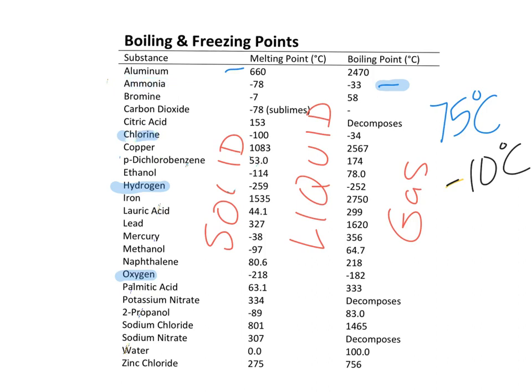Suppose I give you a substance — lauric acid — and ask you to give me a temperature where it would be solid. There's an infinite number of answers, but pick a temperature that's reasonable for lauric acid to be solid. You find lauric acid on the list, and you notice that to be solid means the temperature has to be less than the melting point — so less than 44 degrees Celsius. Any temperature less than 44.1 degrees Celsius, it would be in the solid state. So you could say 20 degrees or minus 30 degrees — at any temperature below 44.1, it would be in a solid state.